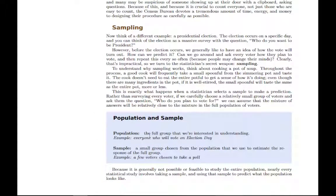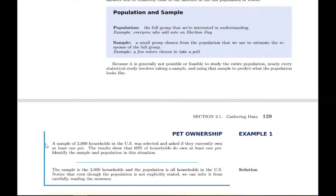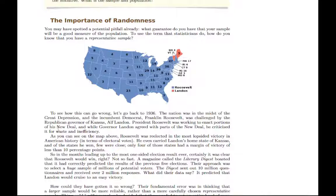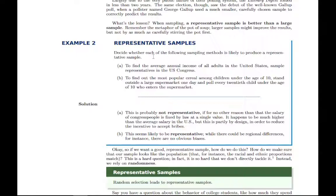A couple of terms here: we talk about the population being the full group, and then the sample being a small group of people or objects that we select from that full population. There's a little bit of discussion here on what makes a good sample, a representative sample. I've got a story here that describes how just picking a large sample isn't the most important thing; it's picking a good sample, a representative sample.